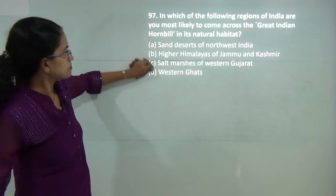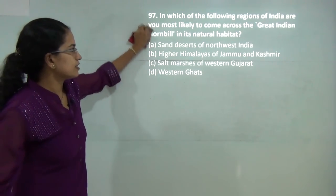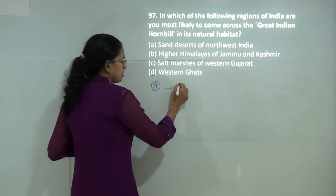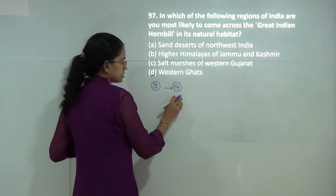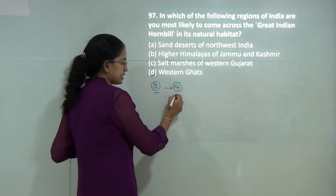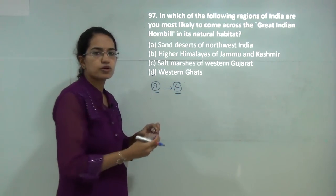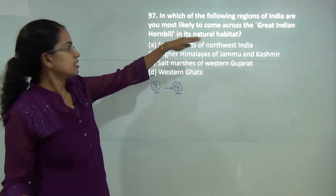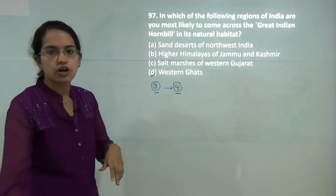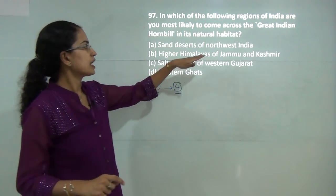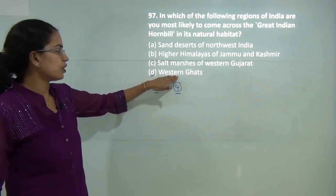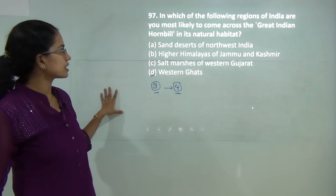The Great Indian Hornbill is found in the Western Ghats. Out of the 9 species of hornbill found in India, 4 endemic species are endemic to the Western Ghats — the Great Indian Hornbill, the Indian Grey Hornbill, the Malabar Grey Hornbill, and the Malabar Pied Hornbill. All of these are endemic to the Western Ghats. So D would be the correct answer.